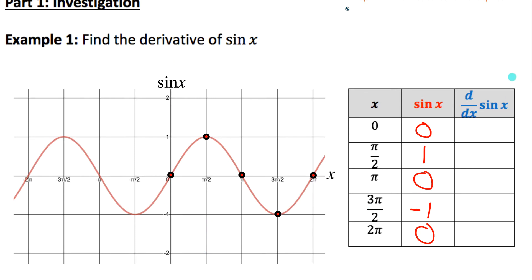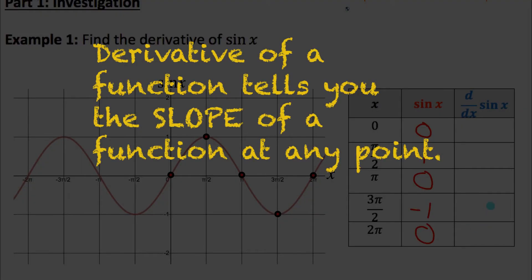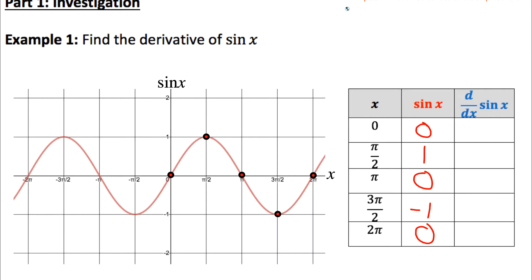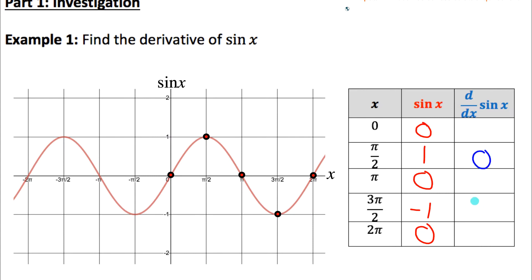Now we want to figure out the value of the derivative of sine x at each of those points. Remember, the derivative tells you the slope of the function at each point, and the slope can be represented with a tangent line. At pi over two and three pi over two there would be horizontal tangents, and since horizontal lines have a slope of zero, the value of the derivative is zero at those points.